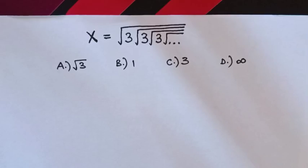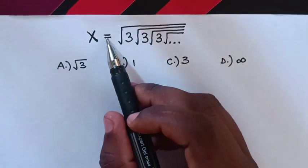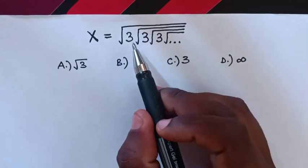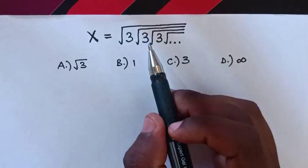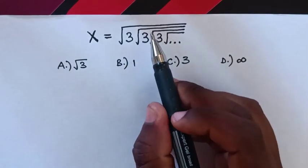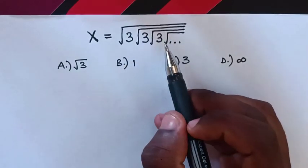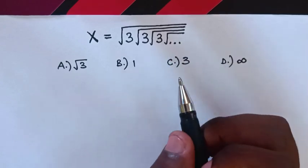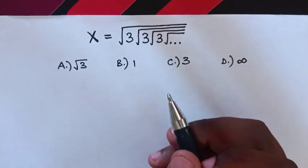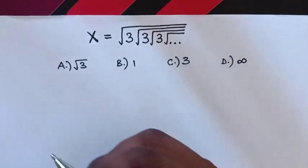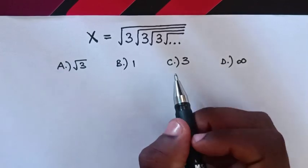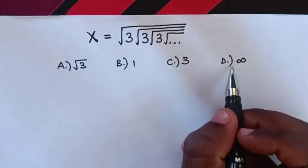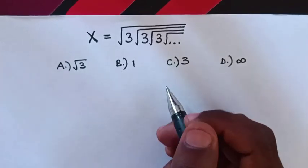Hello. How to solve this infinite equation, which is x is equal to square root of 3, square root of 3, square root of 3, square root of 3 and infinite. To find the value of x, and choose between the answer a, b, c, or d.